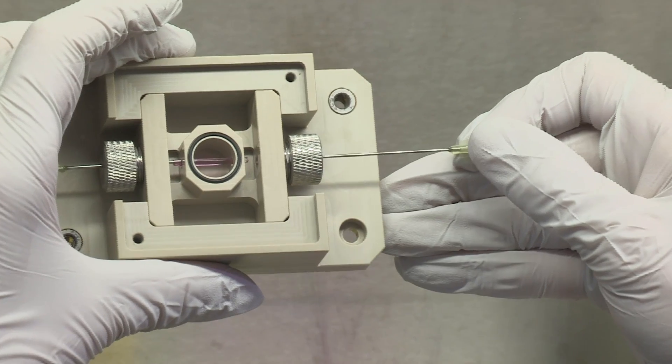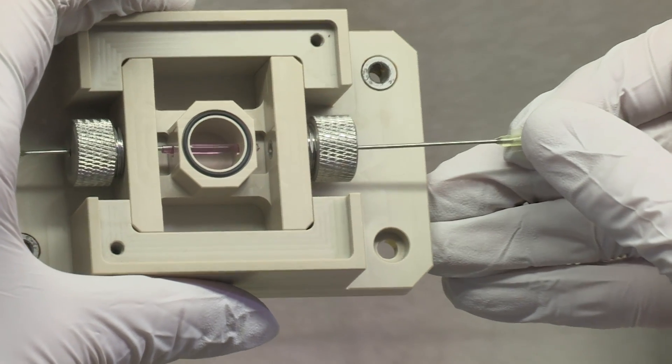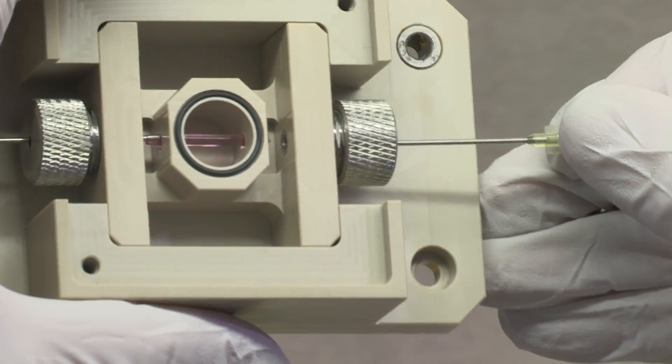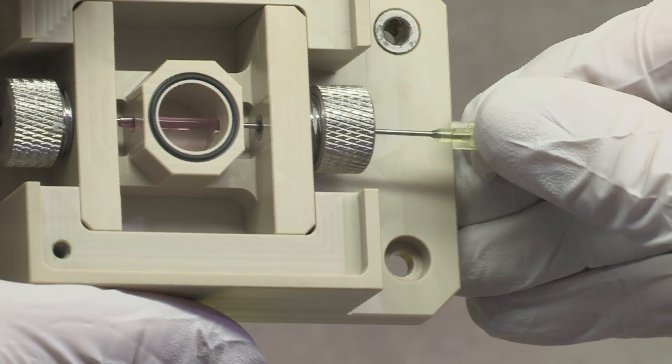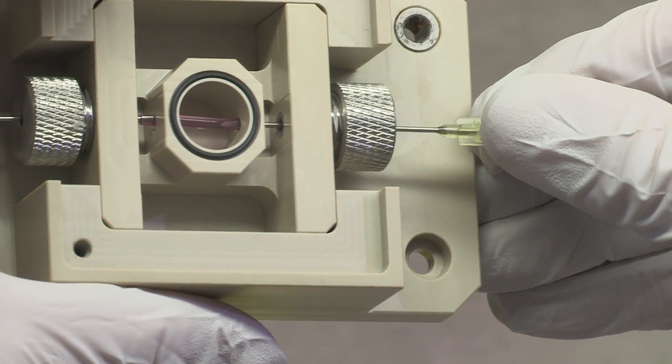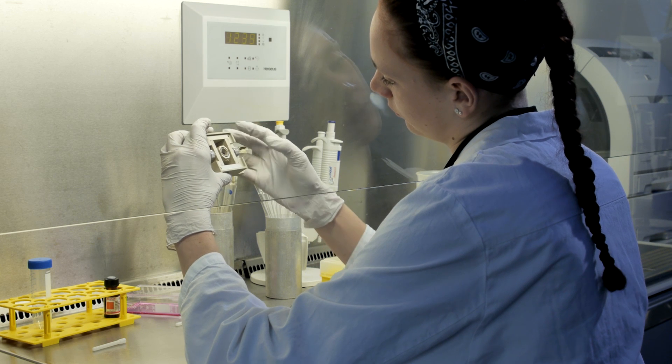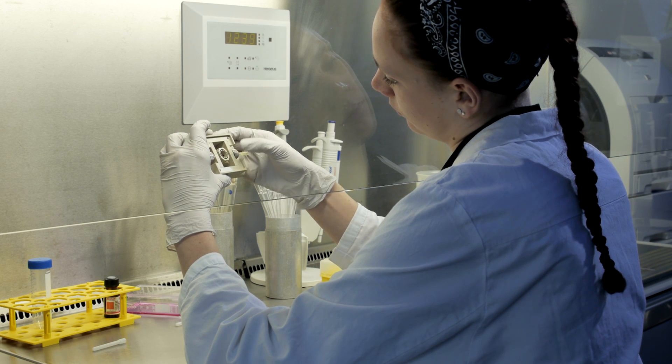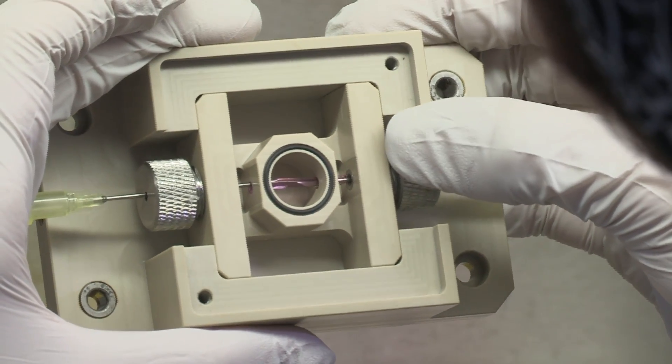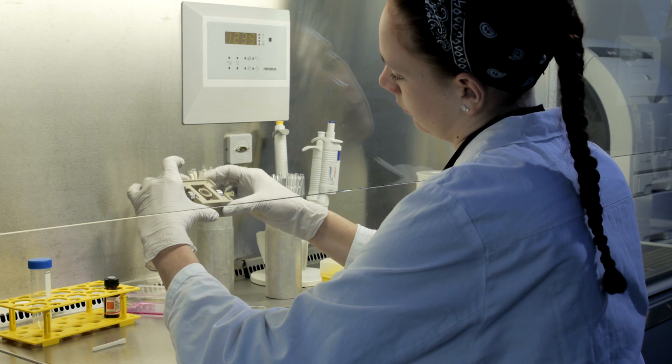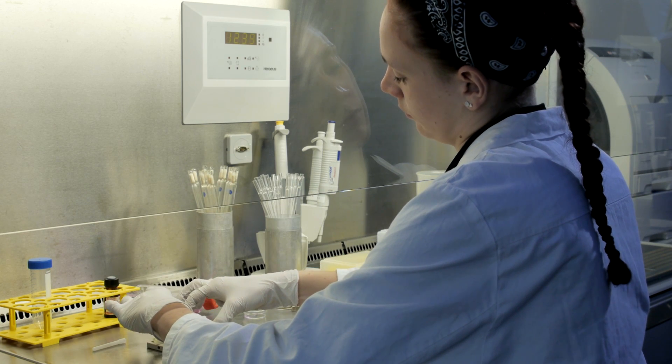Currently, the assembly of the tubular system is still done manually. In the next step, the cell culture medium is flushed through the tubes just like blood in real blood vessels. The aim for the future is to perform the complete assembly automatically in order to produce high numbers of identical tissue.